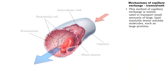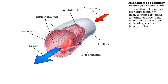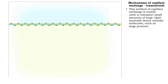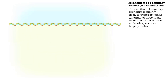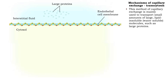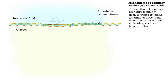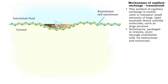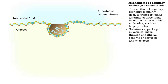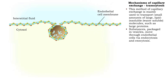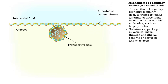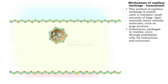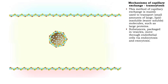Transcytosis is used to move small amounts of large lipid-insoluble molecules, such as large proteins, across capillary membranes. In this process, substances contained in vesicles enter endothelial cells by endocytosis and exit by exocytosis.